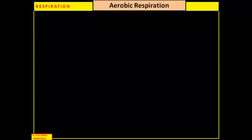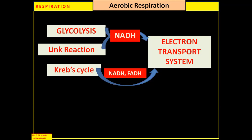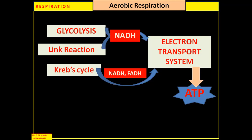Aerobic respiration completes in three important steps: glycolysis, link reaction, Krebs cycle, and electron transport system. Glycolysis and Krebs cycle are linked by the link reaction. During glycolysis and link reaction, the synthesis of NADH takes place. When these NADH undergo oxidation in the electron transport system, likewise NADH and FADH2 synthesized during the Krebs cycle release energy conserved as ATP. These three steps we are going to study.